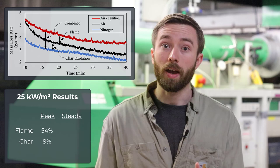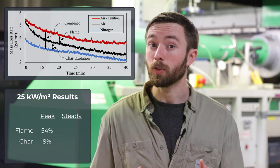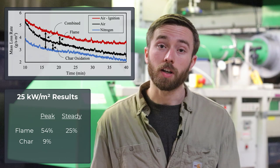The same process can be applied to quasi-steady state. In the case of 25 kilowatts per meter squared at quasi-steady state, we can see that the flame heat feedback contribution has decreased to approximately 25 percent of the total burning rate, while the char oxidation contribution has increased to approximately 11 percent.